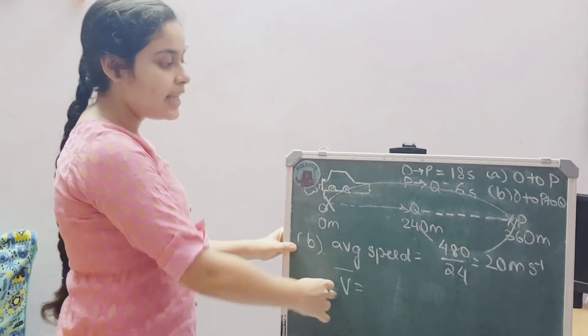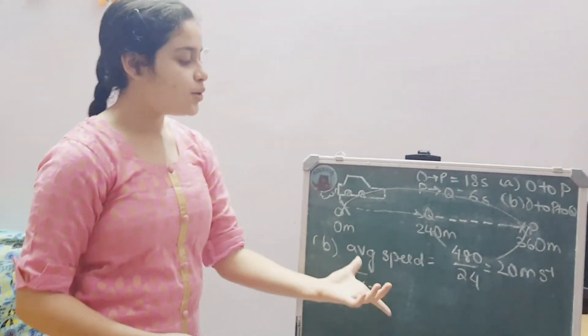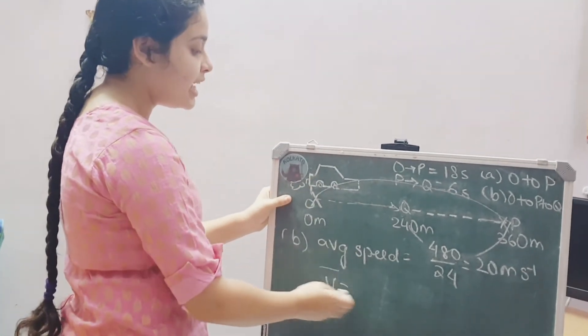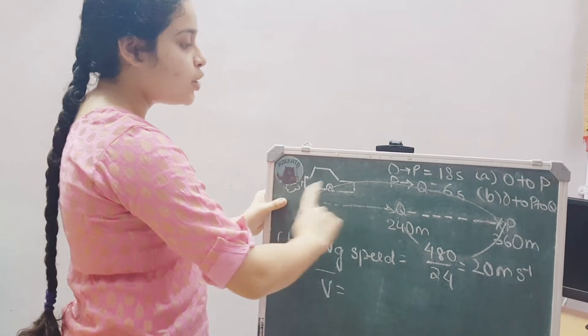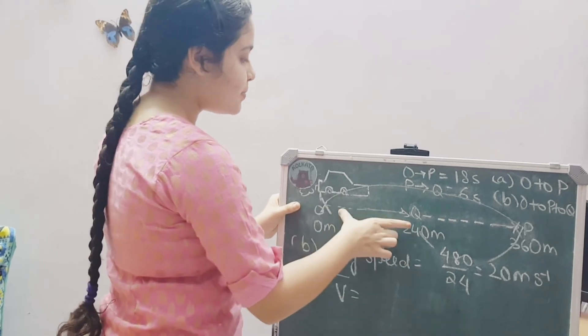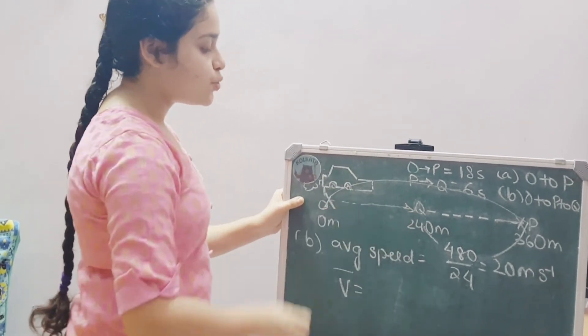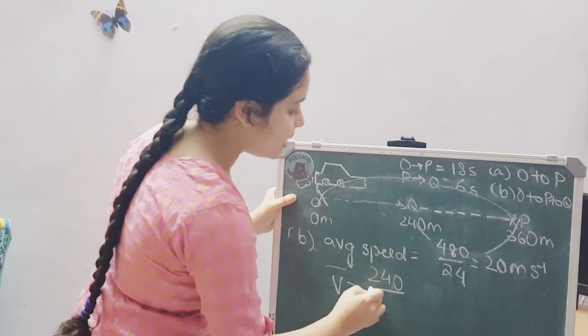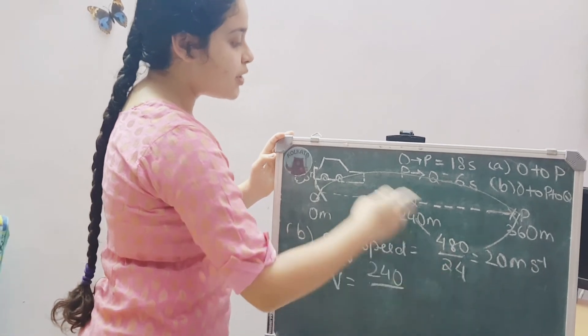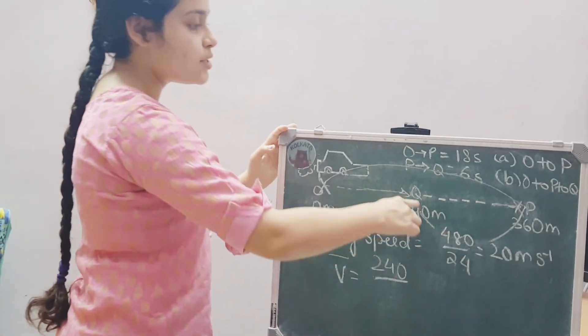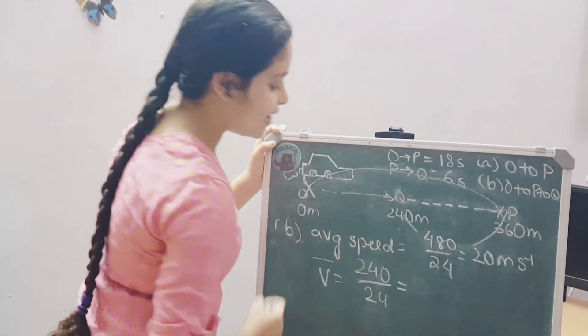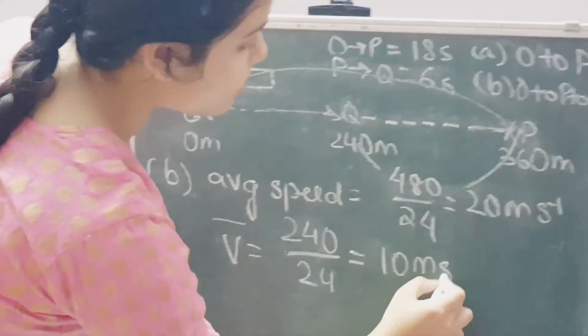Now, average velocity is given by the total displacement by the total time taken. Now, here the average velocity. So, displacement is from point O to point Q. Because this is the shortest distance to reach point Q. So, displacement is actually just 240 meters. So, 240 by the total time taken will remain same. That is 24 seconds. Because the time is taken to move around this whole case. That means 18 seconds plus 6 seconds. So, our average velocity in this case is 10 meters per second.